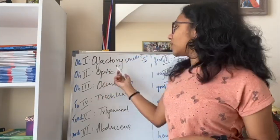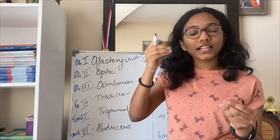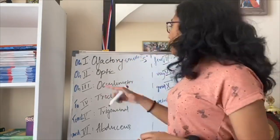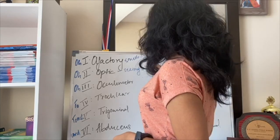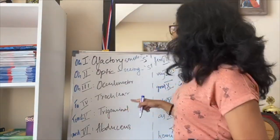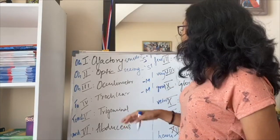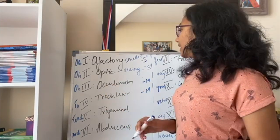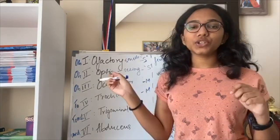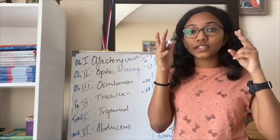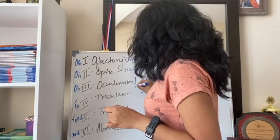The second one is optic. Signals travel from the photoreceptor cells of the retina to the optic center in the brain via the optic nerve, so this nerve is for seeing and is also sensory. The third nerve is oculomotor — 'oculo' means eye and 'motor' means movement — so it is used to focus the eye on objects and to constrict and dilate the pupil. This is a motor nerve.